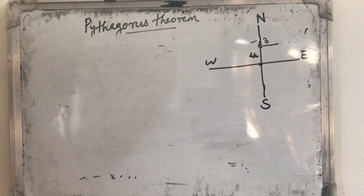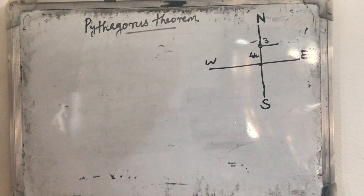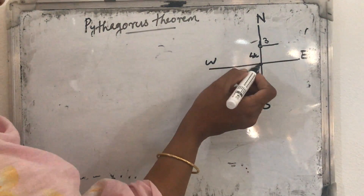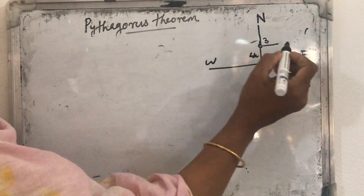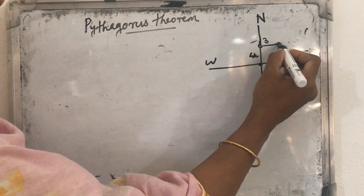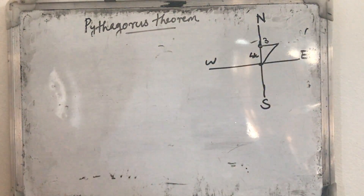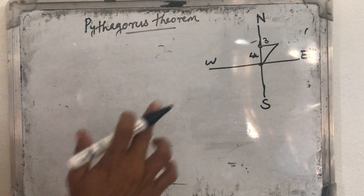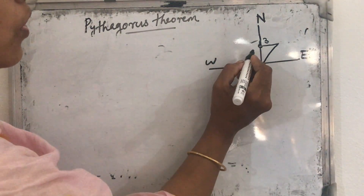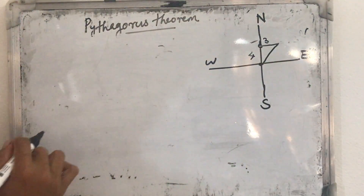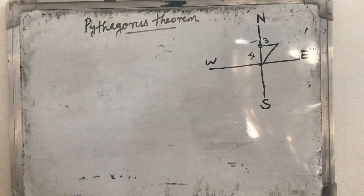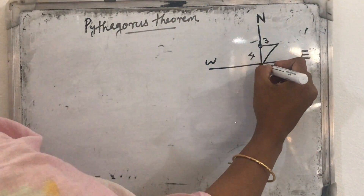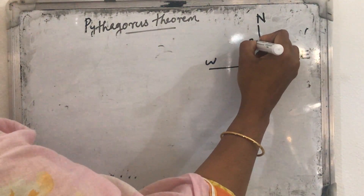Then what do you want to find out? Find the distance between the starting point and the terminating point. The starting point is this, the terminating point is this. We want to find out this distance. In this case, a right-angled triangle is formed. The vertical side is 4 km and the horizontal side is 3 km.